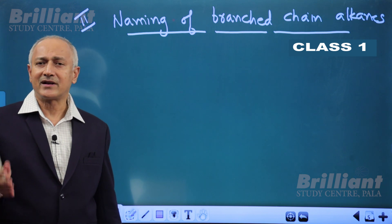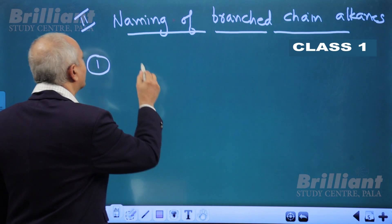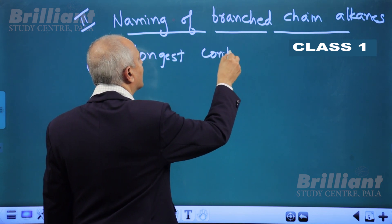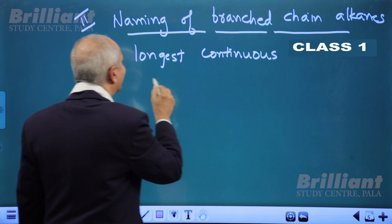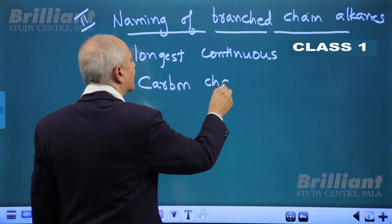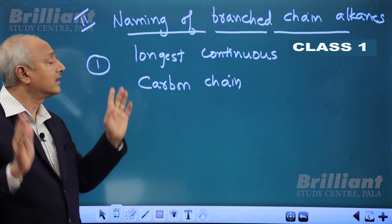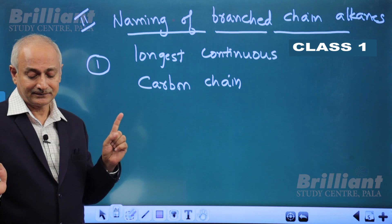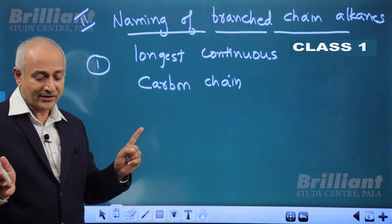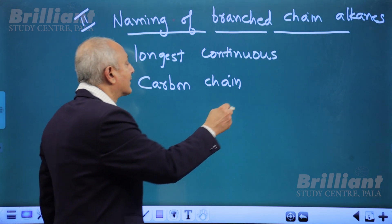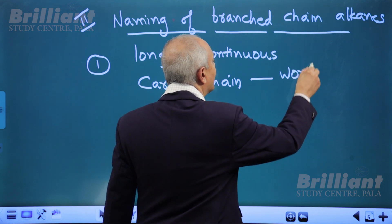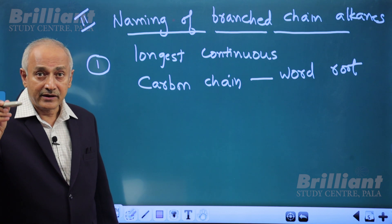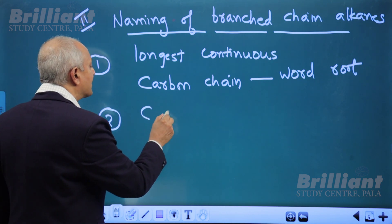What are the rules we have to observe when naming branched chain alkanes? The first rule: consider the longest continuous carbon chain in the organic compound — the word root is derived from that. We count the number of carbon atoms on the longest continuous carbon chain and derive the word root from that number.